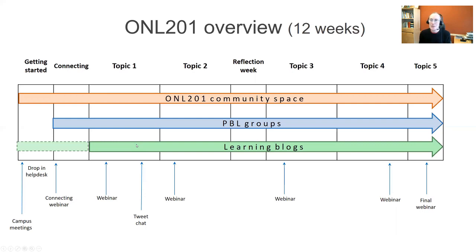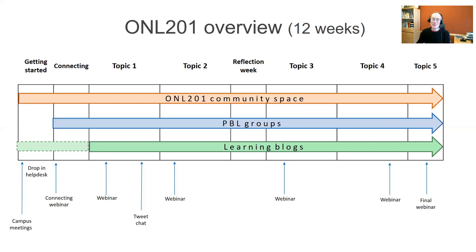There is also an individual strand, as you'll be expected to create a blog in the first two weeks if you haven't already done so, and write a blog post for each topic reflecting on what you've learned, how it influences your own teaching, with examples and references. So we have three levels of involvement: individual, group, and course-wide. There will also be a number of common activities like webinars for everybody — not compulsory, but we advise you to take part. We'll also let you try a Twitter chat, known as a tweet chat, and may have some other surprises.